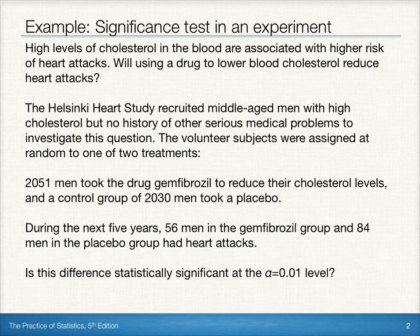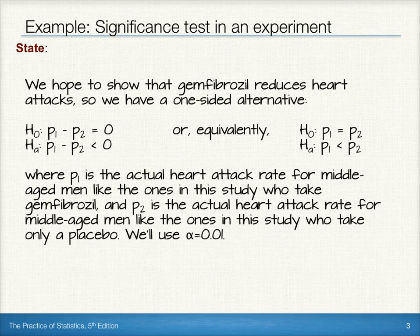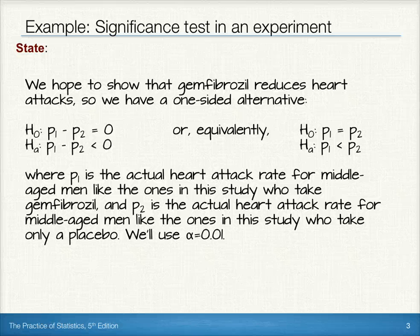We want to know if that difference is statistically significant at the alpha equals 0.01 level. Let's start by stating our problem. We hope to show that gemfibrozil reduces heart attacks, so we actually have a one-sided alternative. We'd like to show that the proportion of individuals who have heart attacks in the group taking the drug is less than the proportion of individuals in the placebo group who would have heart attacks.